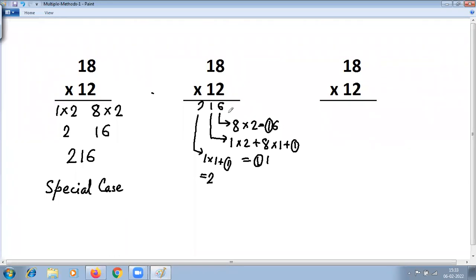The answer is 2, 1, 6, same answer. The second method of solving the same problem, this method is criss-cross.